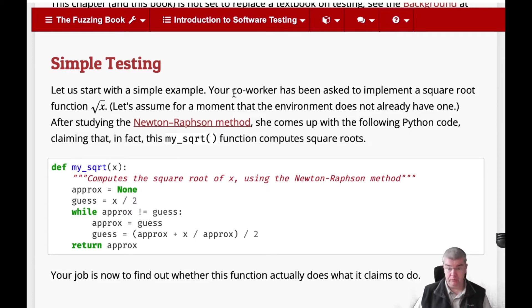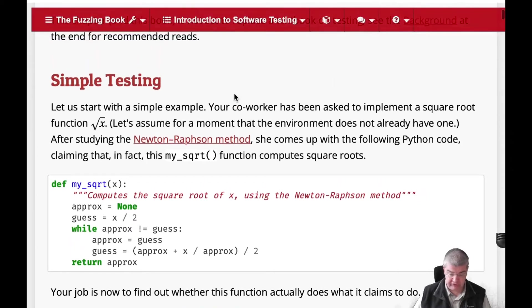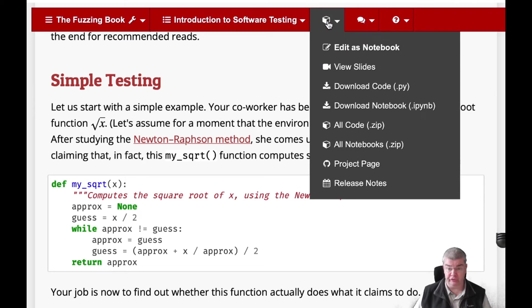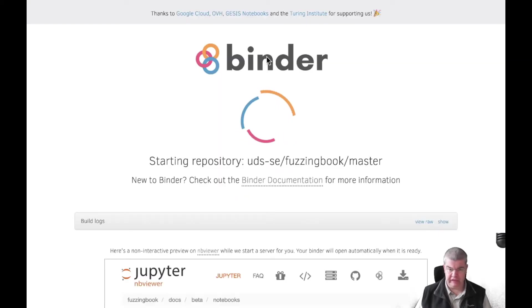Now we can see what this function actually is doing not only by reading the HTML page here, but actually by going into the resources menu. And here you find a special place called edit as notebook which we're going to invoke right now. What you get here is the so-called MyBinder environment which is now going to start a Jupyter notebook with this code just for you.